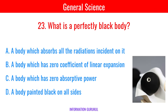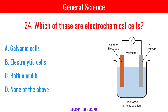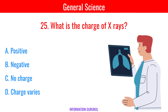What is a perfectly black body? A body which absorbs all the radiation incident on it. Which of these are electrochemical cells? Both galvanic cells and electrolytic cells. What is the charge of X-rays? No charge.